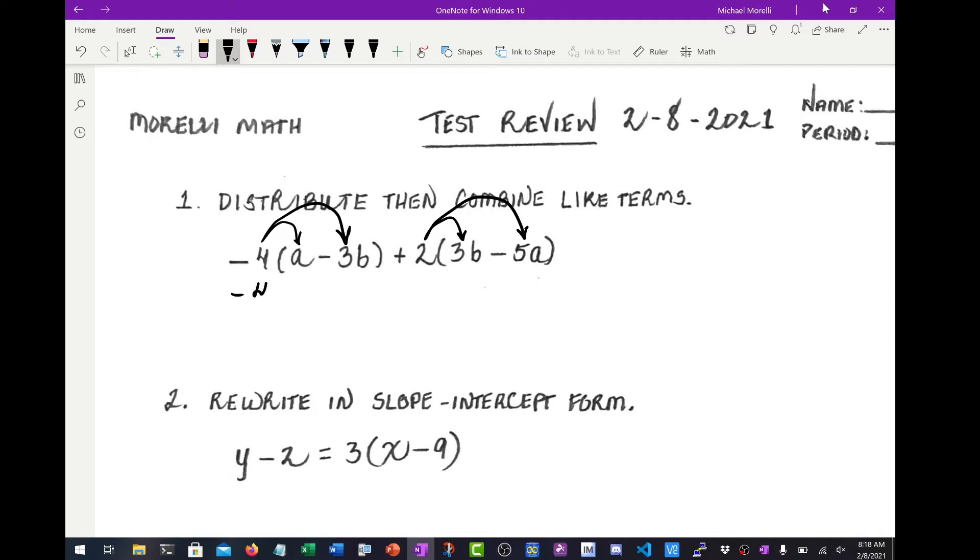You have negative 4 times A is negative 4A. Negative 4 times negative 3B - negative times a negative is a positive, negative 4 times negative 3 is positive 12, so negative 4 times negative 3B is positive 12B. Plus 2 times 3B is 6B. 2 times negative 5A is negative 10A.